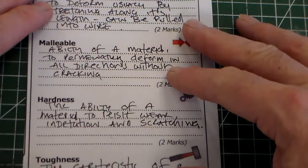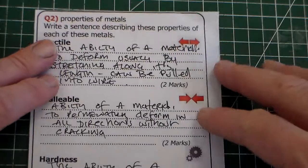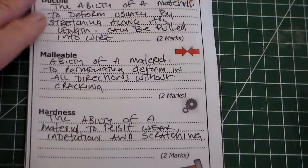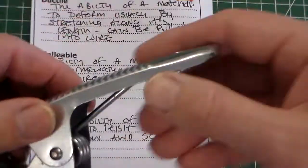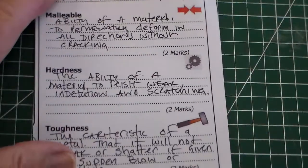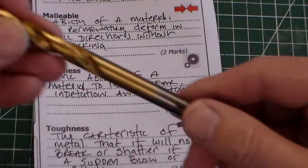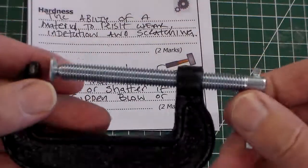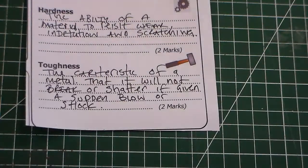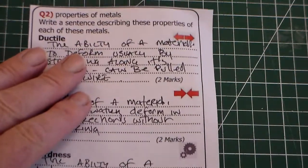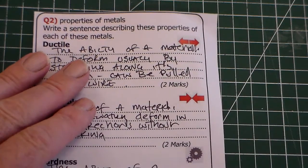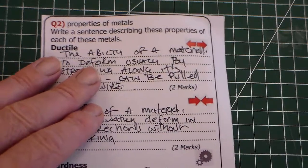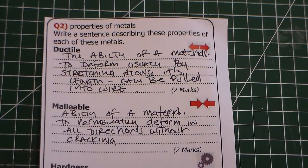So there we've got it. As I say, this is quite a tricky thing and it does come up in the exam. So we've got ductile, which is able to be pulled and stretched. We've got malleable, which is able to be formed and shaped. We've got hardness, which resists wear, and then we've got toughness, which resists impact. So there it is. There's those properties of metals. Thank you for watching Mr. Ridley's Design and Technology.